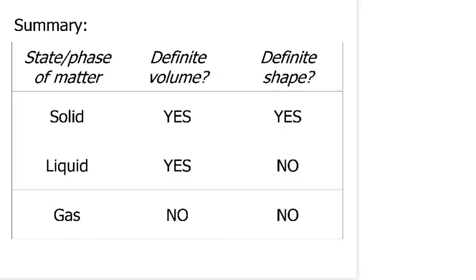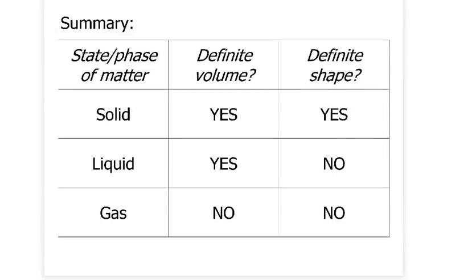Here's a summary in table form. Solid: definite volume? Yes. Definite shape? Yes. Liquid: definite volume? Yes. Definite shape? No — it takes on the shape of its container. Gas: definite volume? No, it takes up all available space. Definite shape? No, it has no shape at all — only if put into a container will it fill up and take on that shape. Those are the vital foundational principles you need to know about states of matter, and that's the foundation we need for talking about thermal physics.